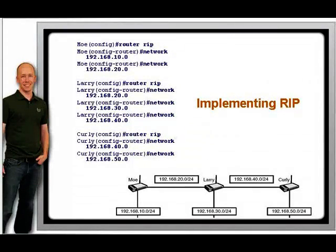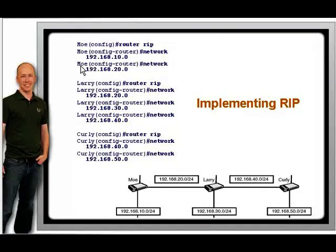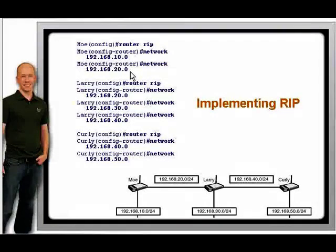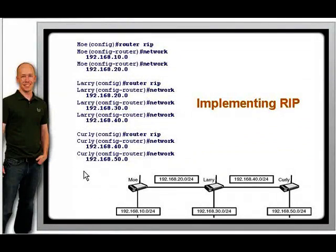In this example, there are three routers named Larry, Curly, and Mo. For the Mo router, you need to enable RIP and enter the networks you want to advertise. The Mo router has the 192.168.10.0/24 and the 192.168.20.0/24 networks directly connected to it. Larry has three networks attached to his router and Curly has two. When you enter your networks in your RIP configuration, RIP is activated on the interfaces that are assigned those networks.